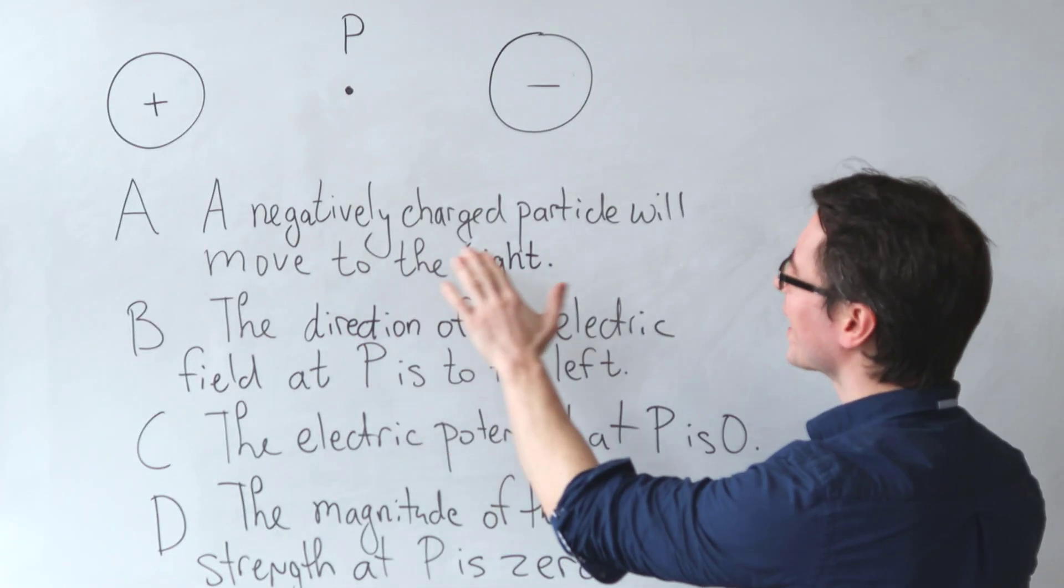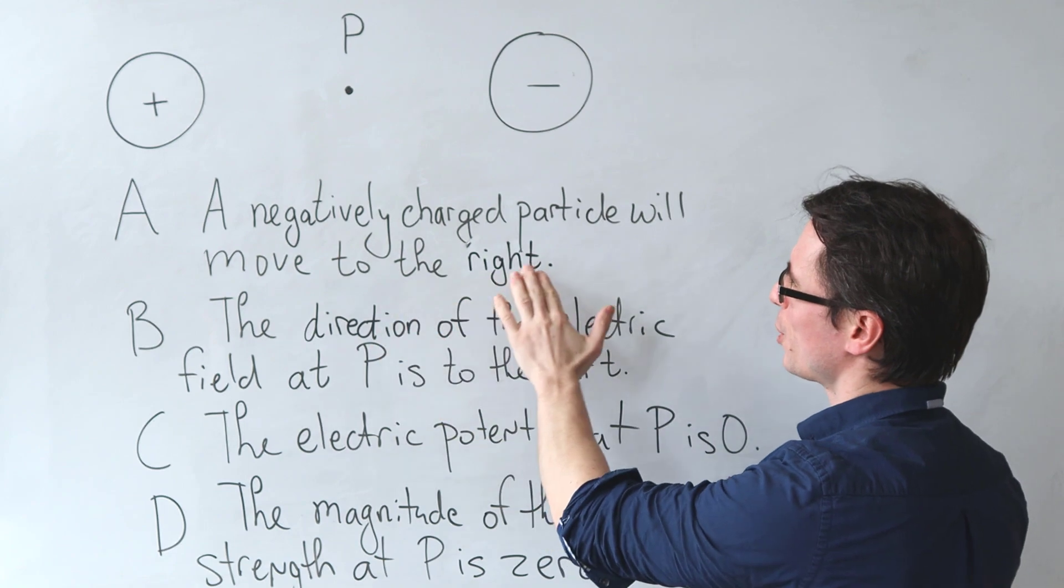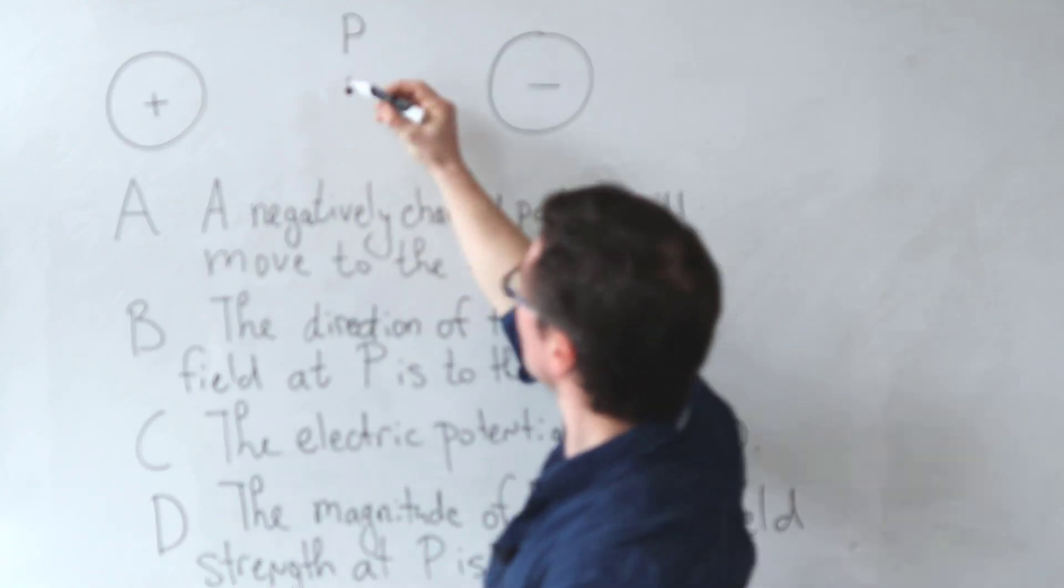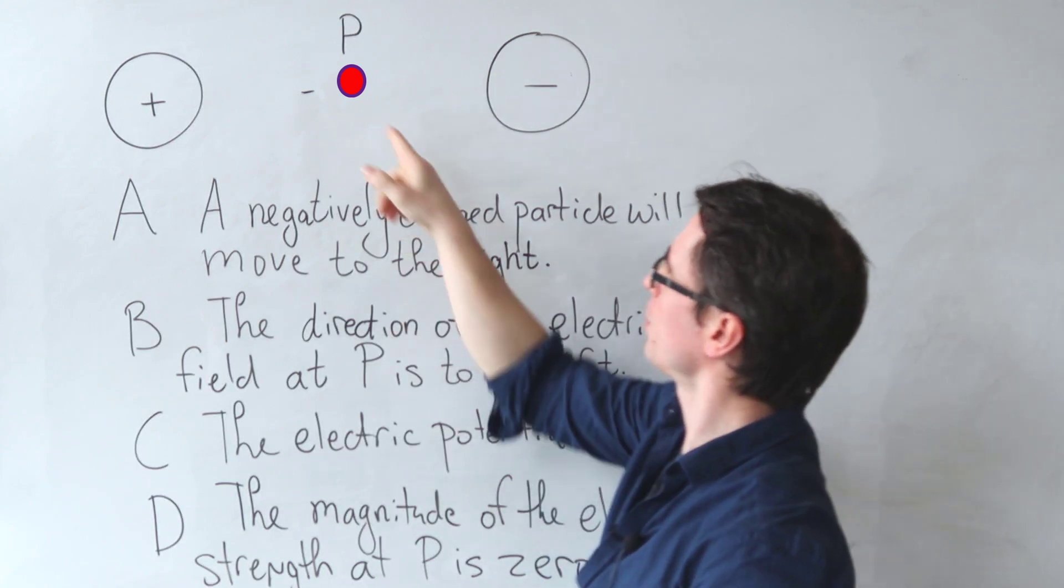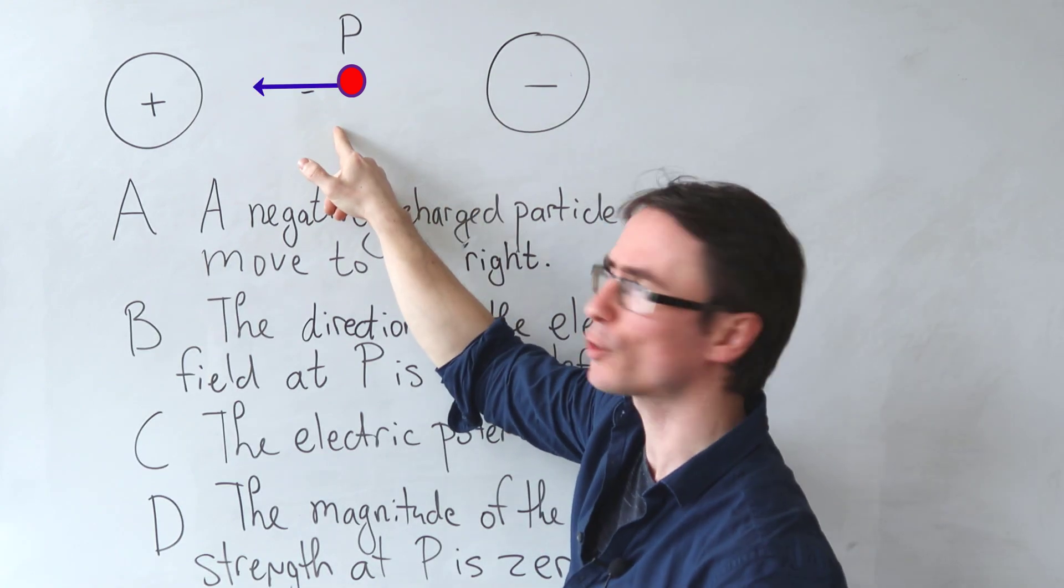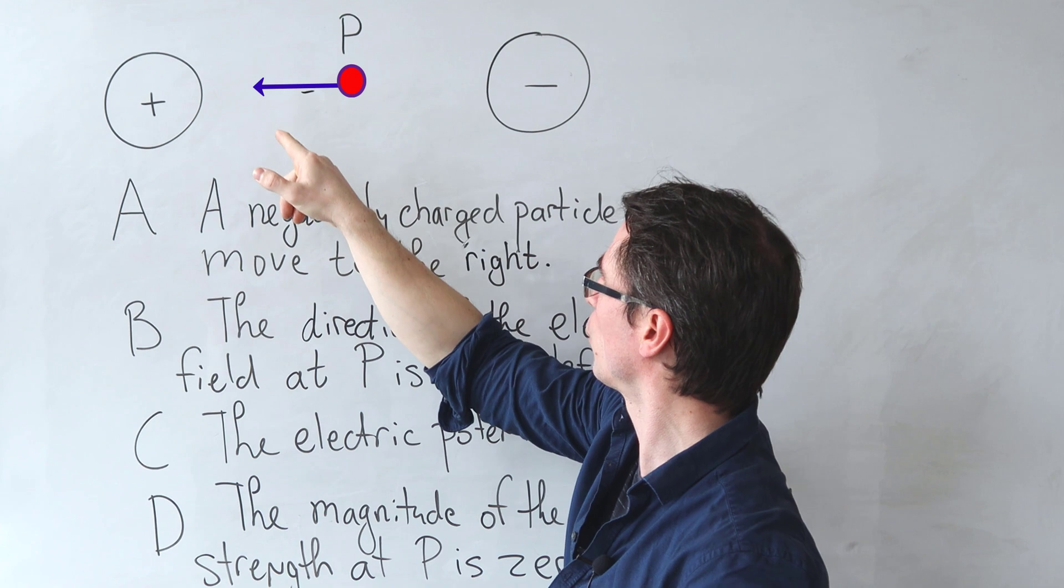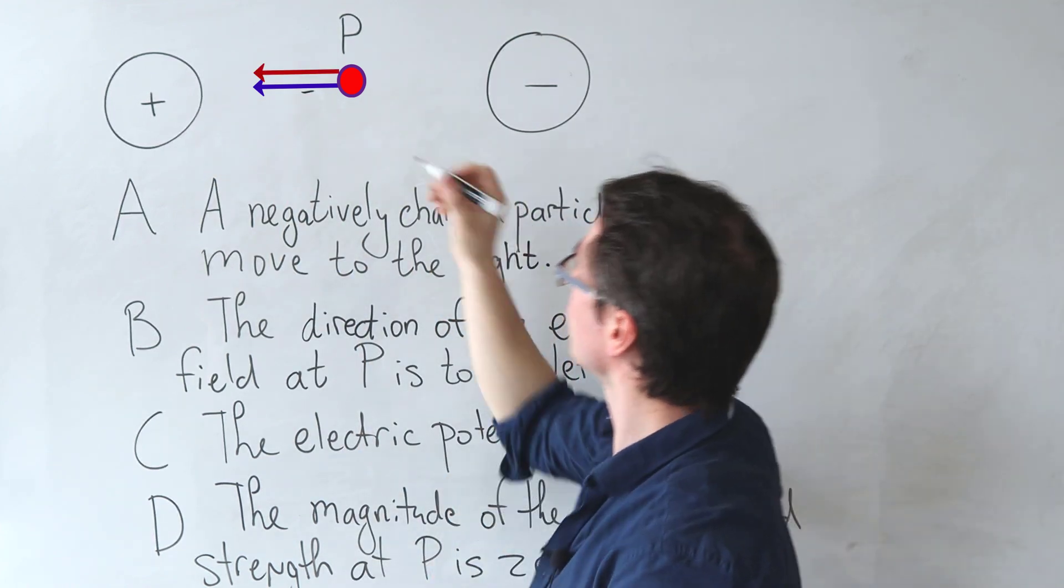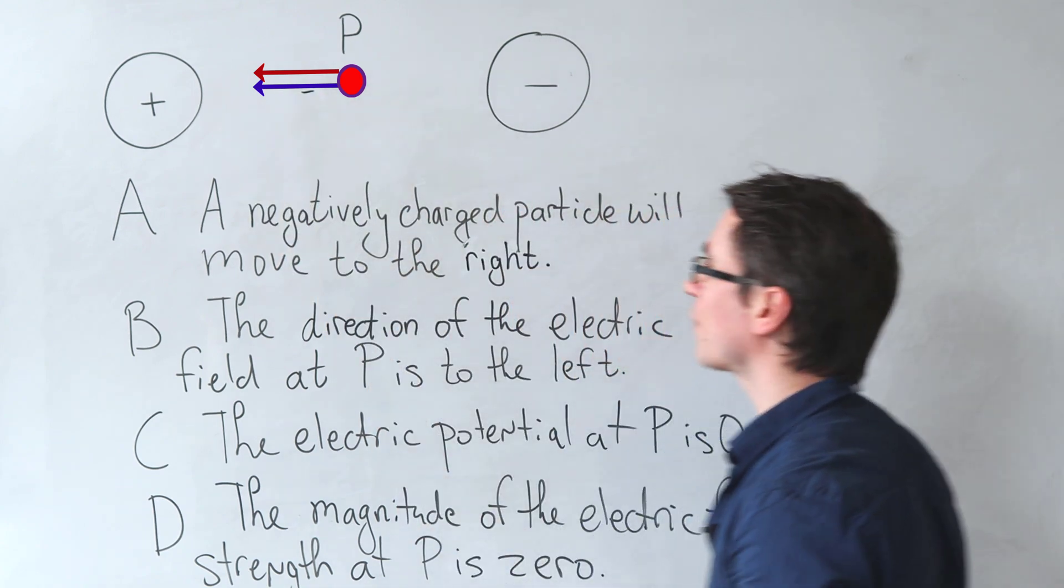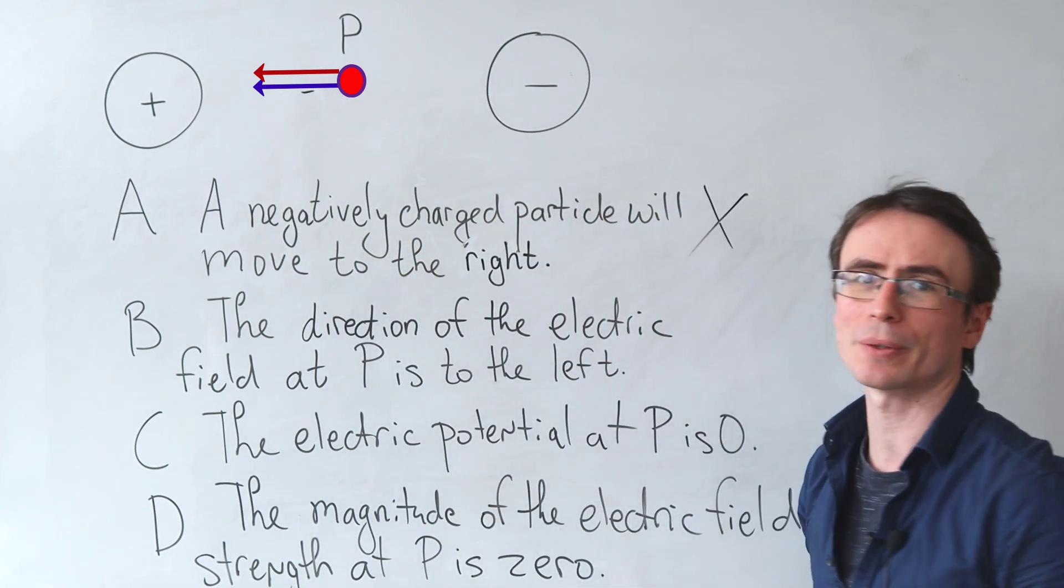So let's have a look at the first one. A negatively charged particle will move to the right. So if I put a little negative charge here, what's going to happen is it's going to be repulsed by the negative charge. So it's going to experience a force to the left, but it will also be attracted to the positive charge. So it will end up going to the left. So A is not correct.